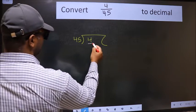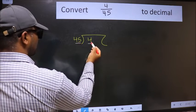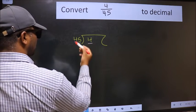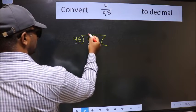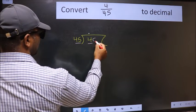Next, here we have 4 and here 45. 4 is smaller than 45, so what we should do is we should put dot and take 0.